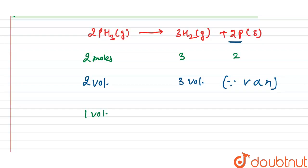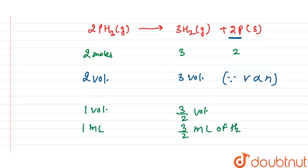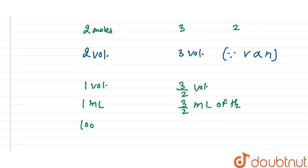Or we can say one mL of PH3 gives 3/2 mL of H2. Or we can say 100 mL of PH3 gives 3/2 times 100 mL of H2.